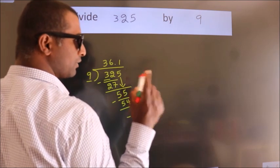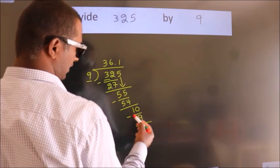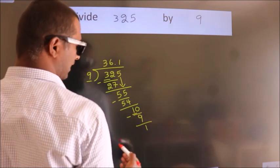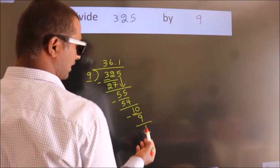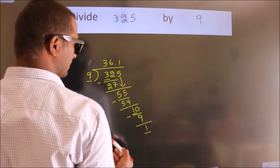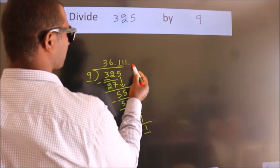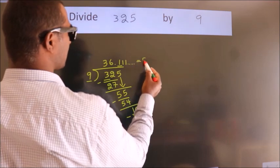Now you observe. Here we had 1 and we got 1 again. That means this number keeps on repeating. So this is our quotient.